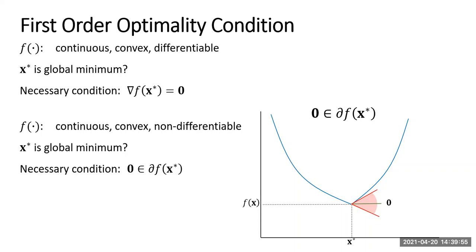Now the first-order optimality conditions for differentiable functions: is x* a global minimum? The necessary condition is that the gradient of f at x* must equal zero. That's the necessary first-order KKT condition for the unconstrained case. But what if the function is not differentiable? How do we test for x* being a global minimum? The necessary condition is that zero must belong to the sub-differential of f at the point x*.